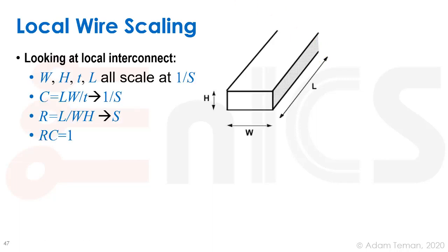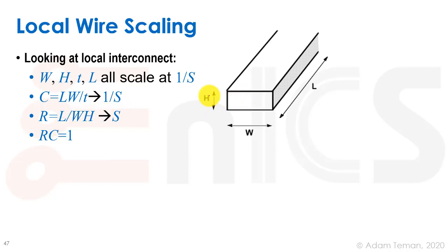For local interconnect, we scale everything by 1/s. The parameters we use are: w for the width of the wire, h for the height or thickness, l for the length, and t for the distance of the wire from ground. If everything gets smaller by 1/s, our capacitance — the parallel plate formula l·w divided by the distance from ground — is proportional to 1/s. The resistance, given by the number of squares times R_square (l divided by w·h), is proportional to s.